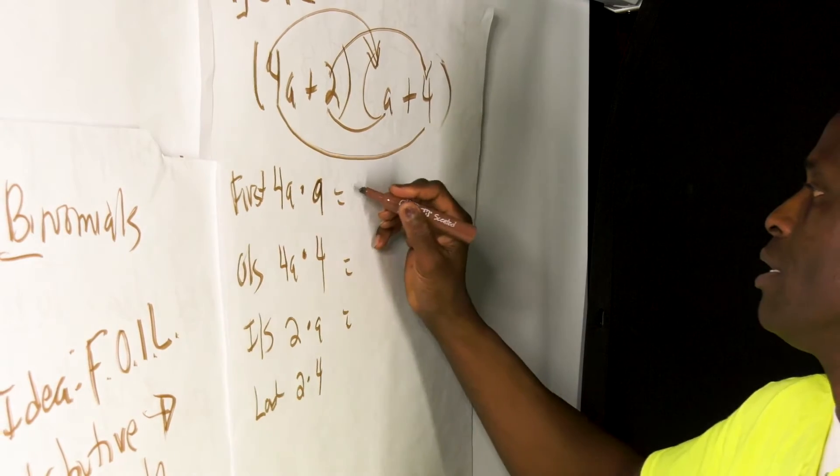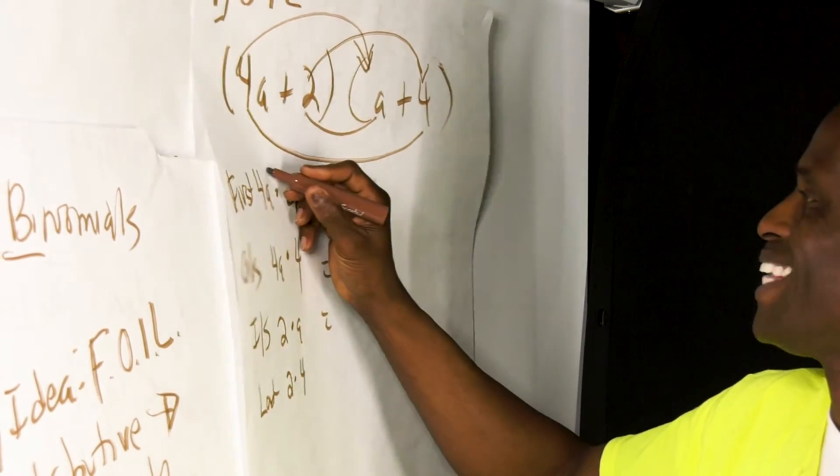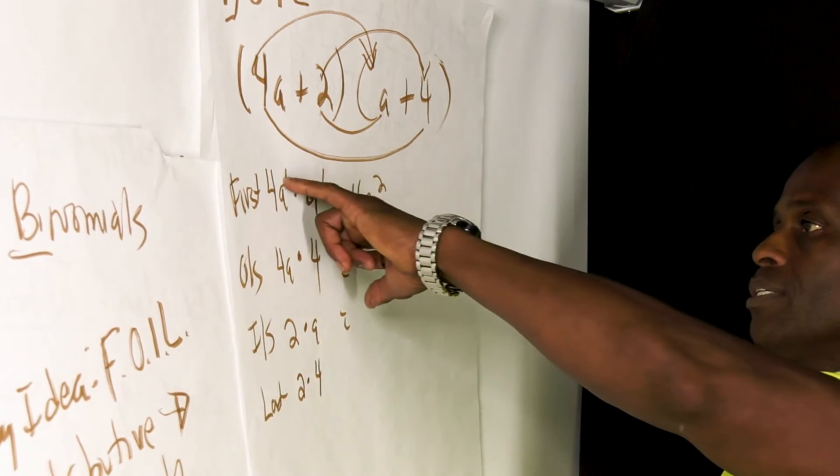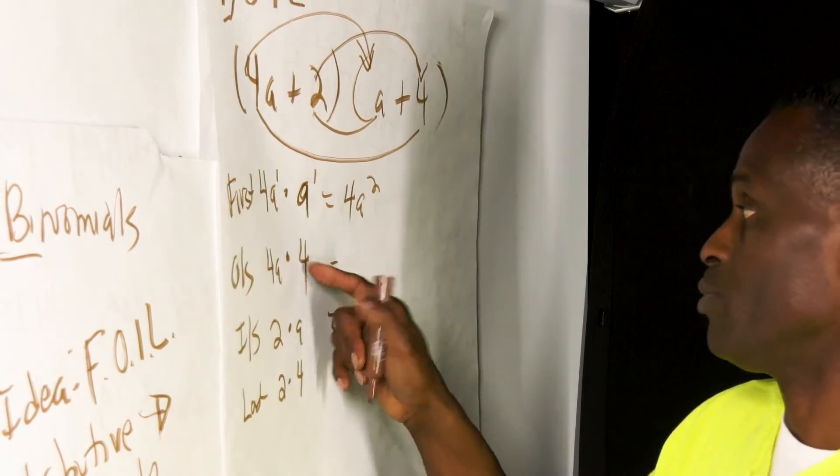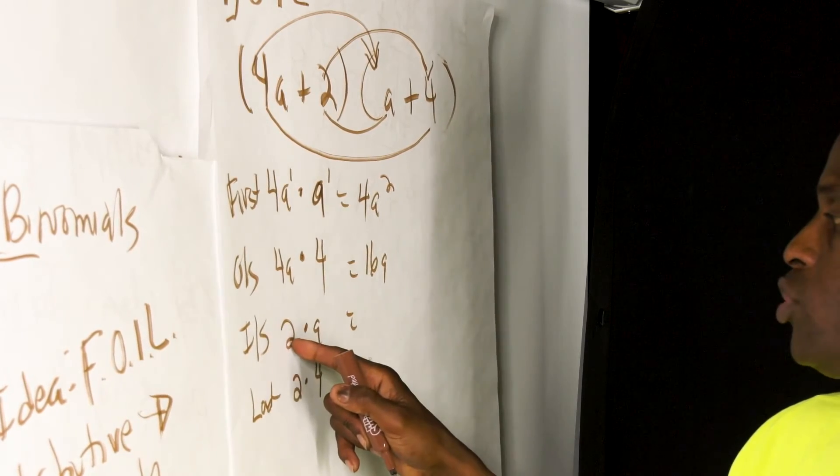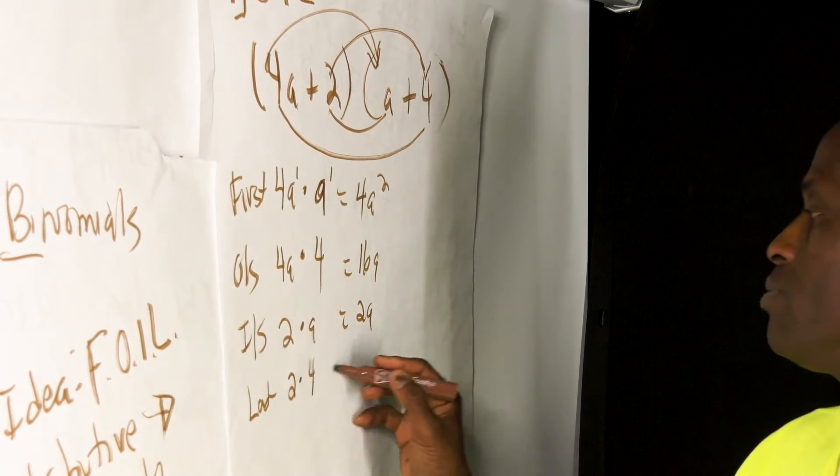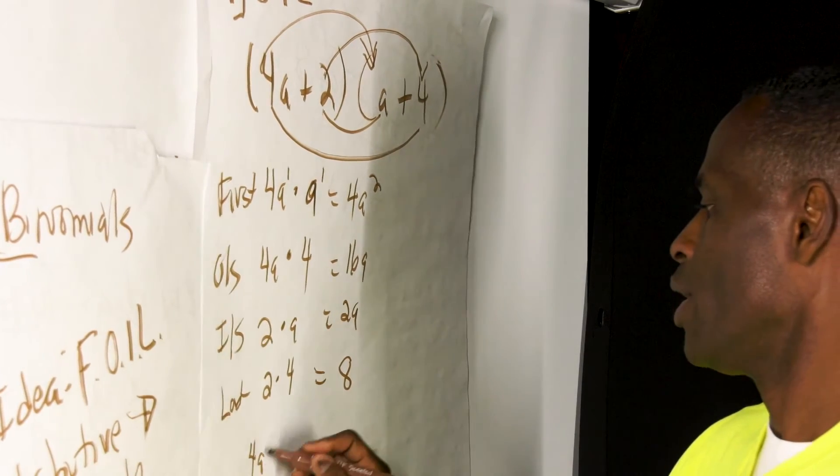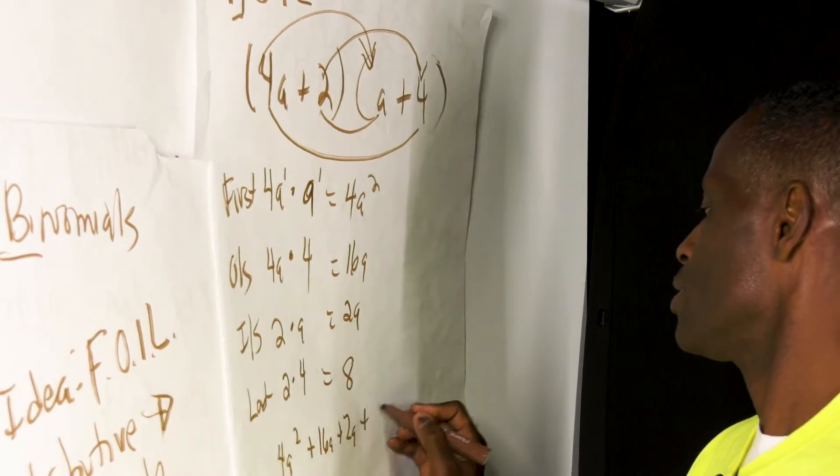So 4a times a is really 4 times 1 which is 4, and a times a which is a squared because that's a 1 there and that's a 1 there. And then we add the exponent when we're multiplying bases. So that's 1 plus 1 which gives us 2. And then we have 4a here times 4, or just 4 times 4 gives us 16, and then we have a right there. So then we have the inside 2 times a gives us 2a. And then we have last 2 times 4 which gives us 8.